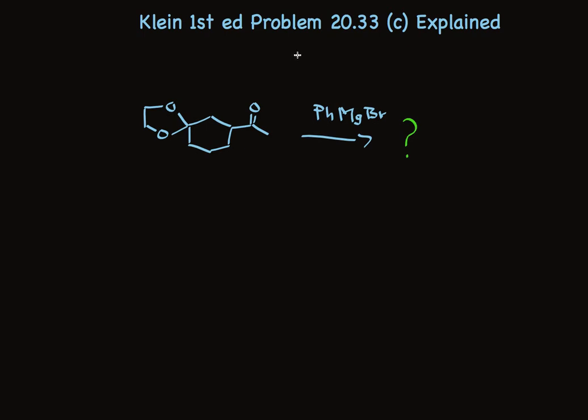Keep in mind that Ph stands for phenyl. We can write that as C6H5 or the aromatic ring with a bond showing right there.